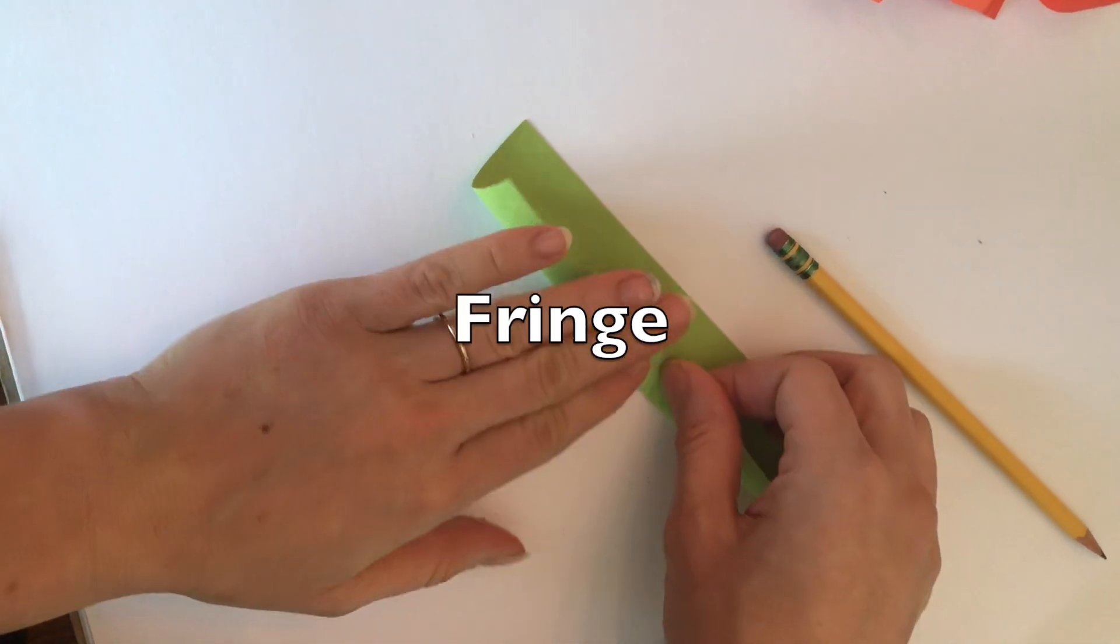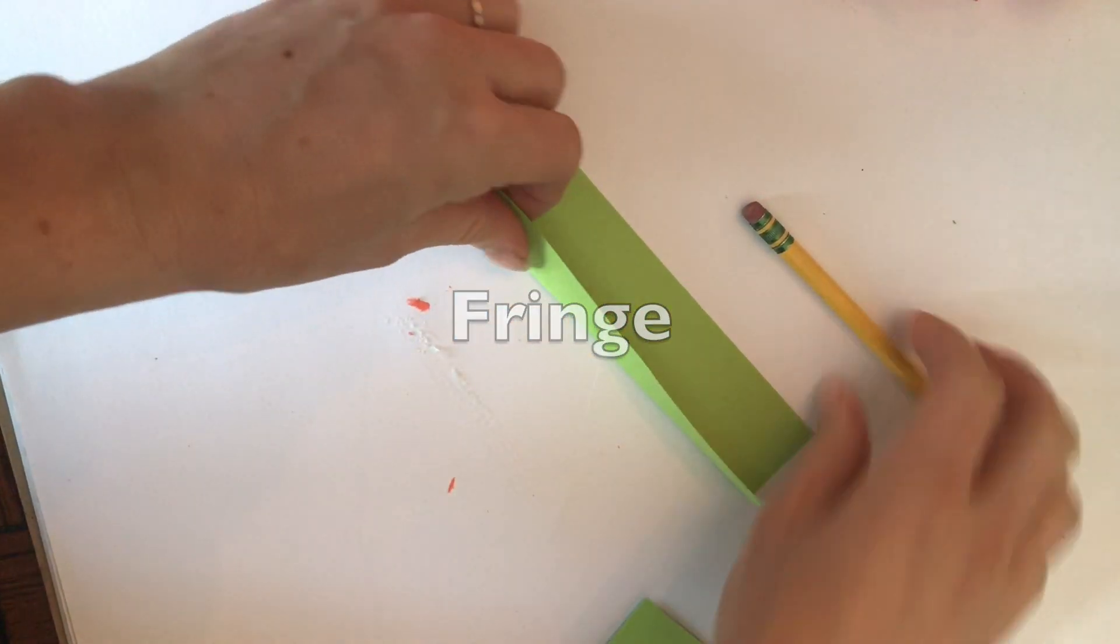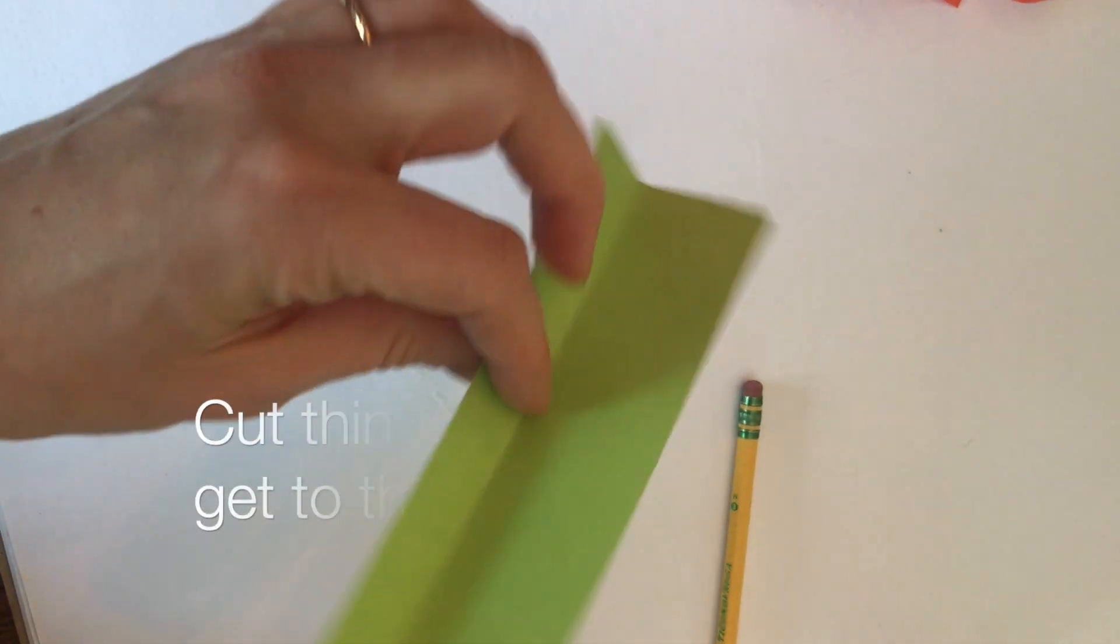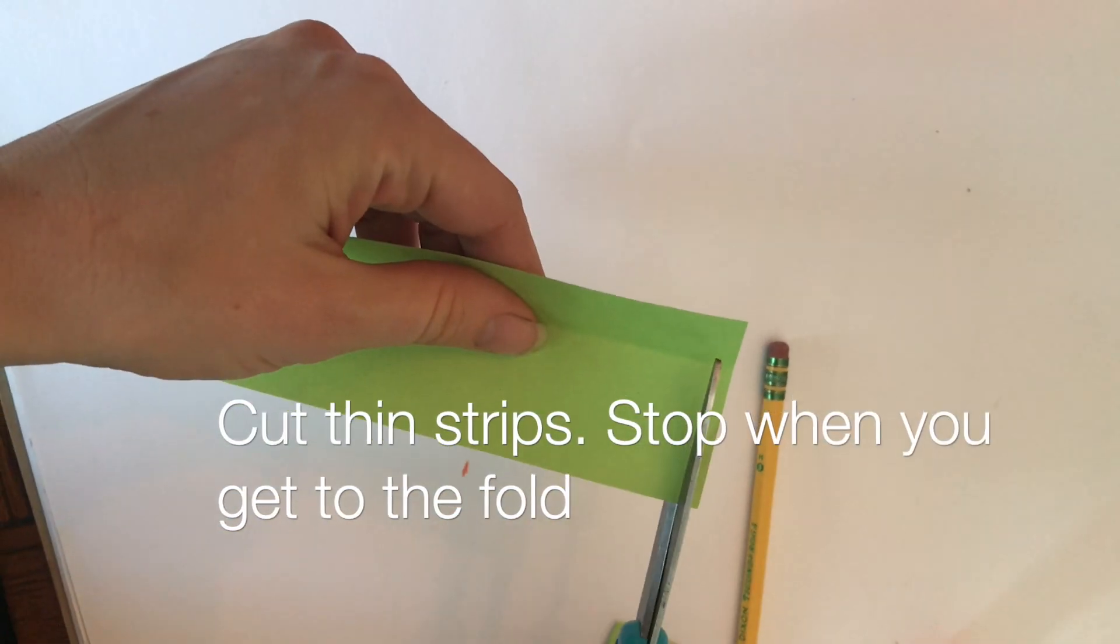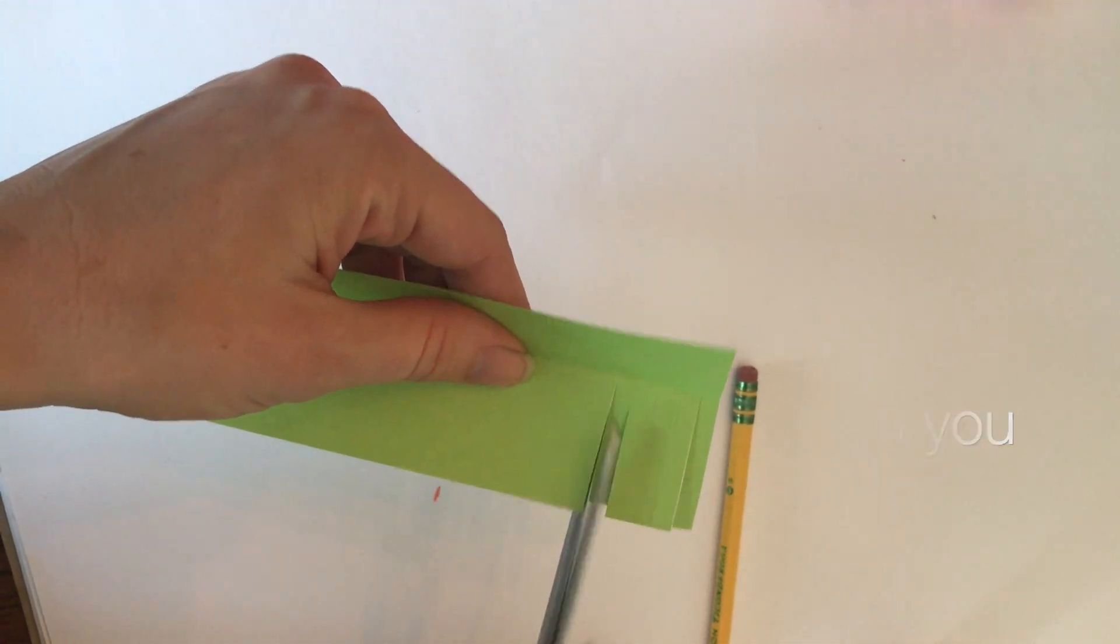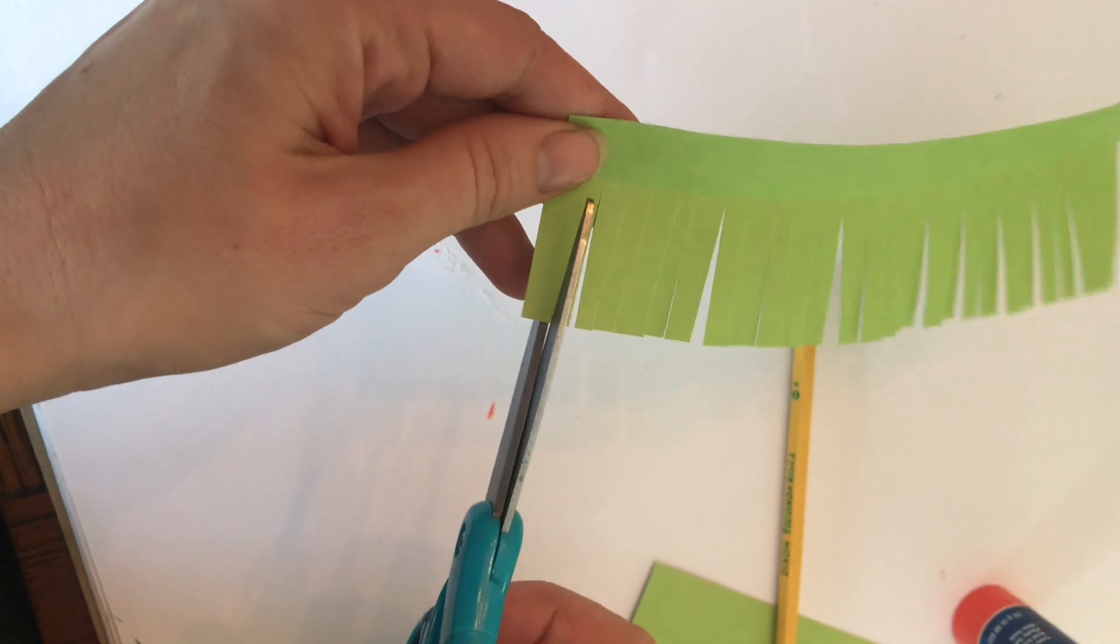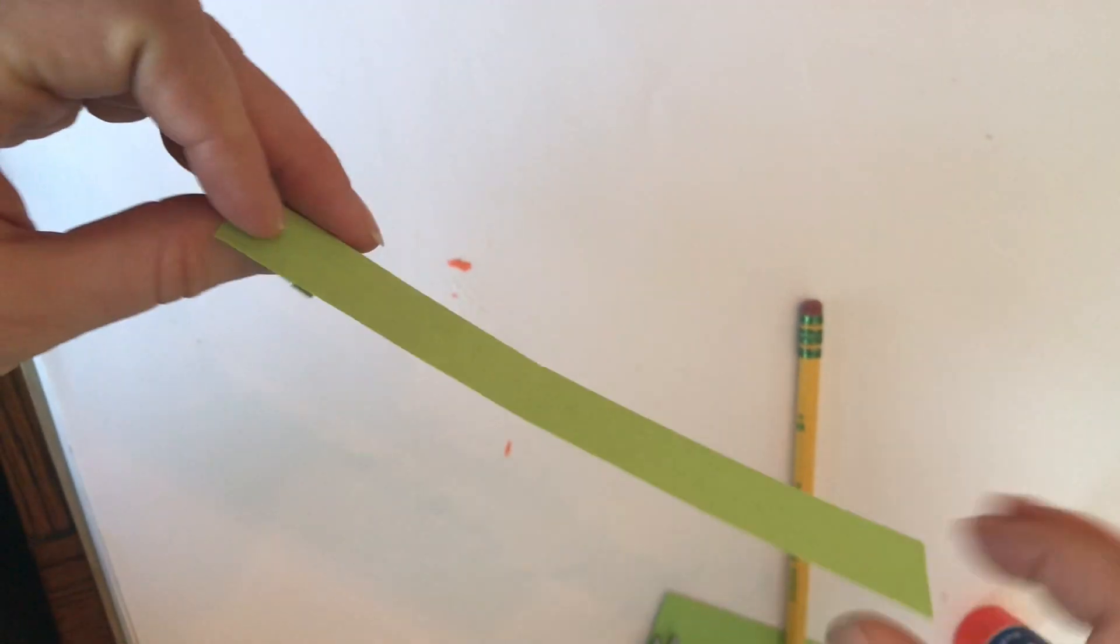To make fringe, first you have to fold your tab about as wide or as thick as your finger. Use a tool to fold the crease sharp. And then with your scissors you just make little slits all the way up to the fold. Then add glue to the tab that you folded.